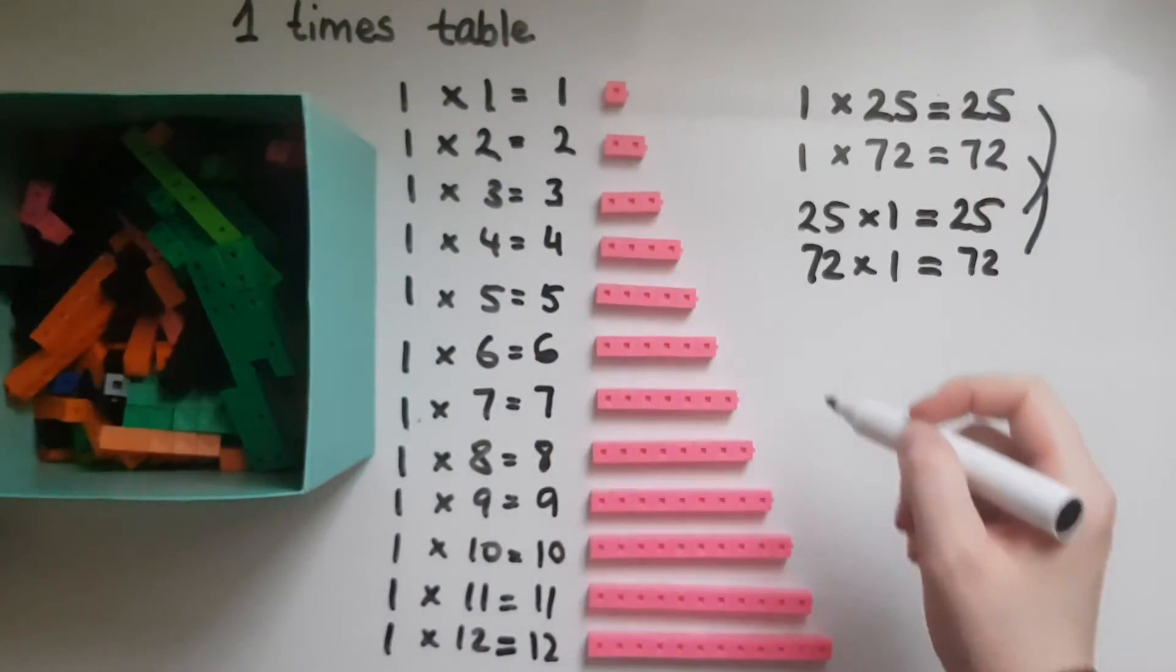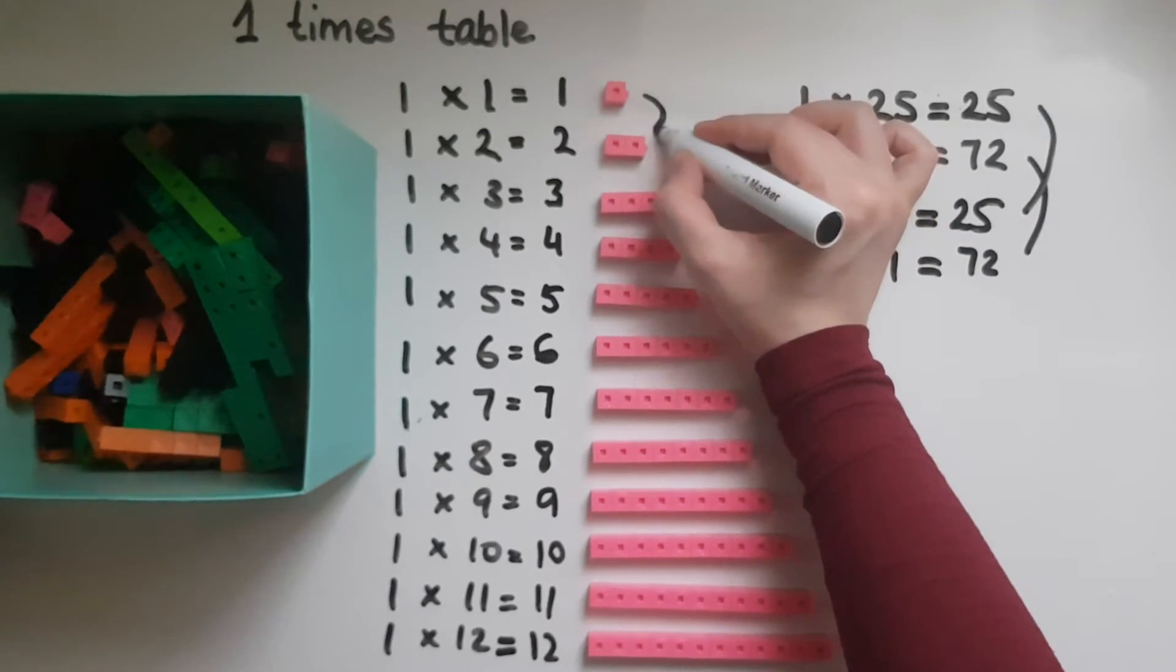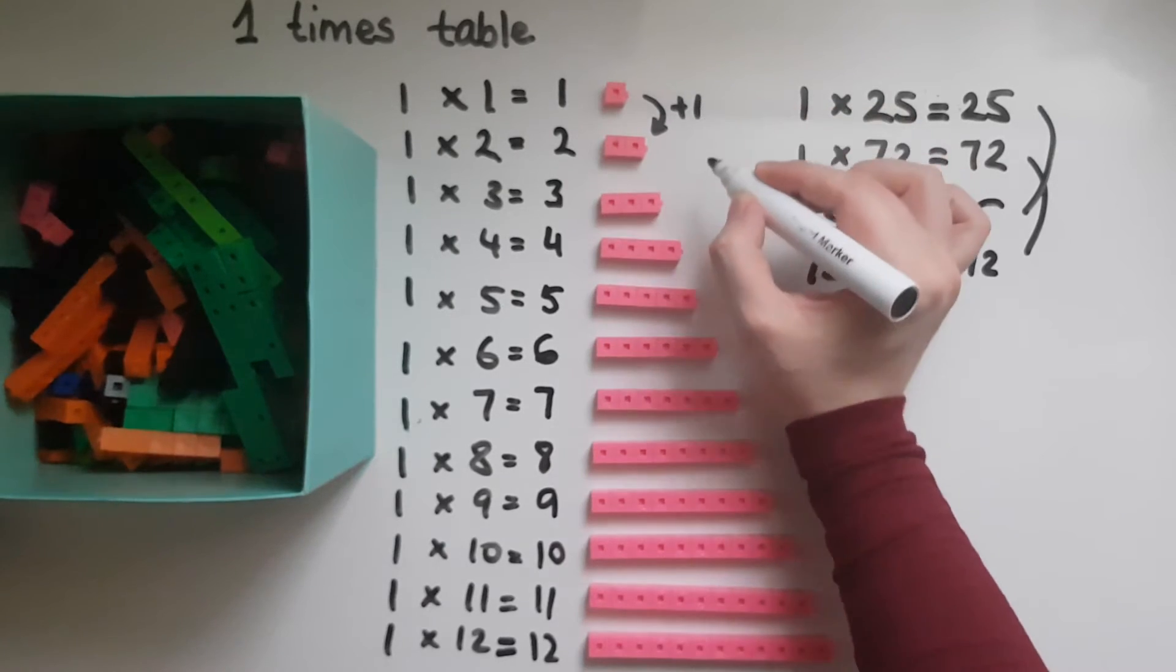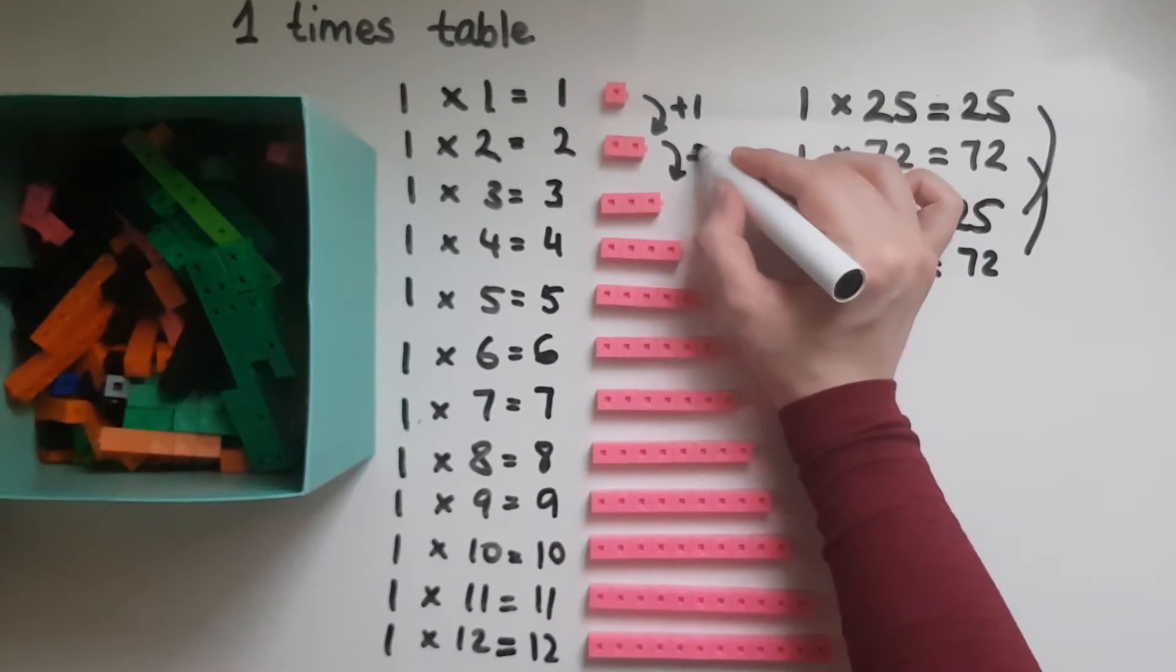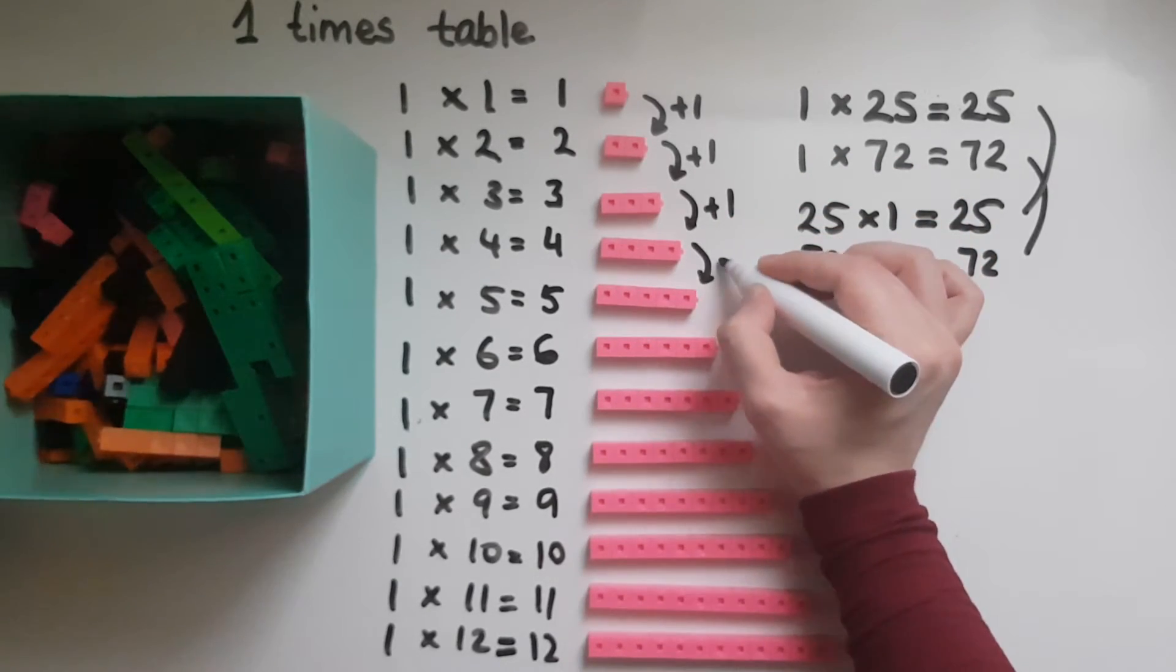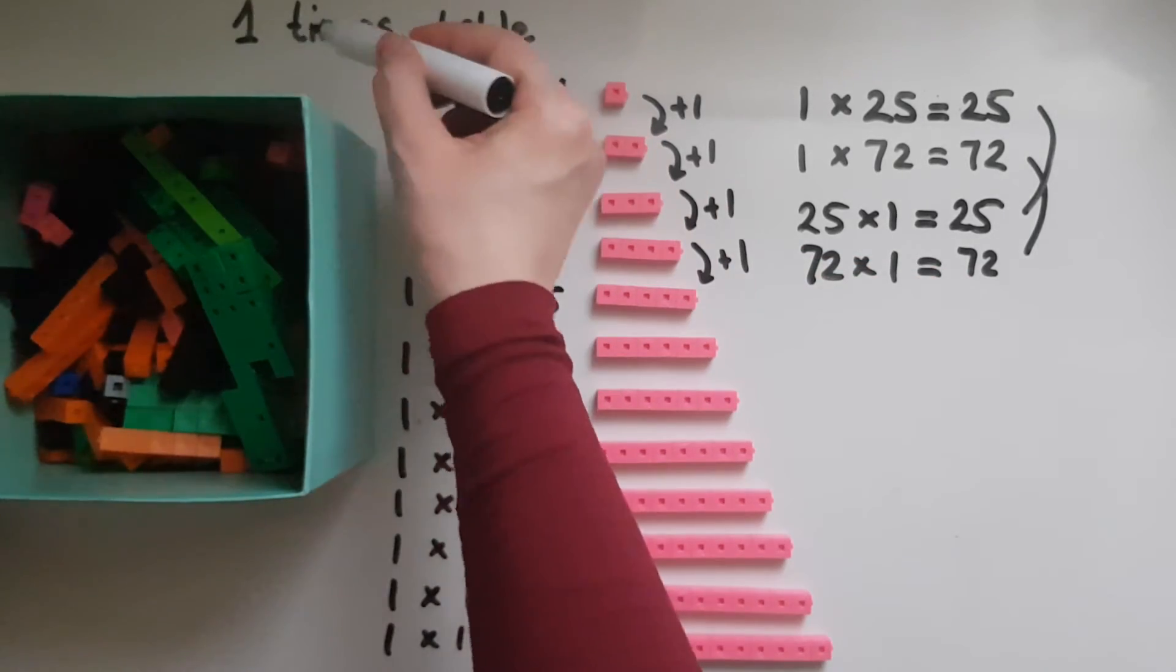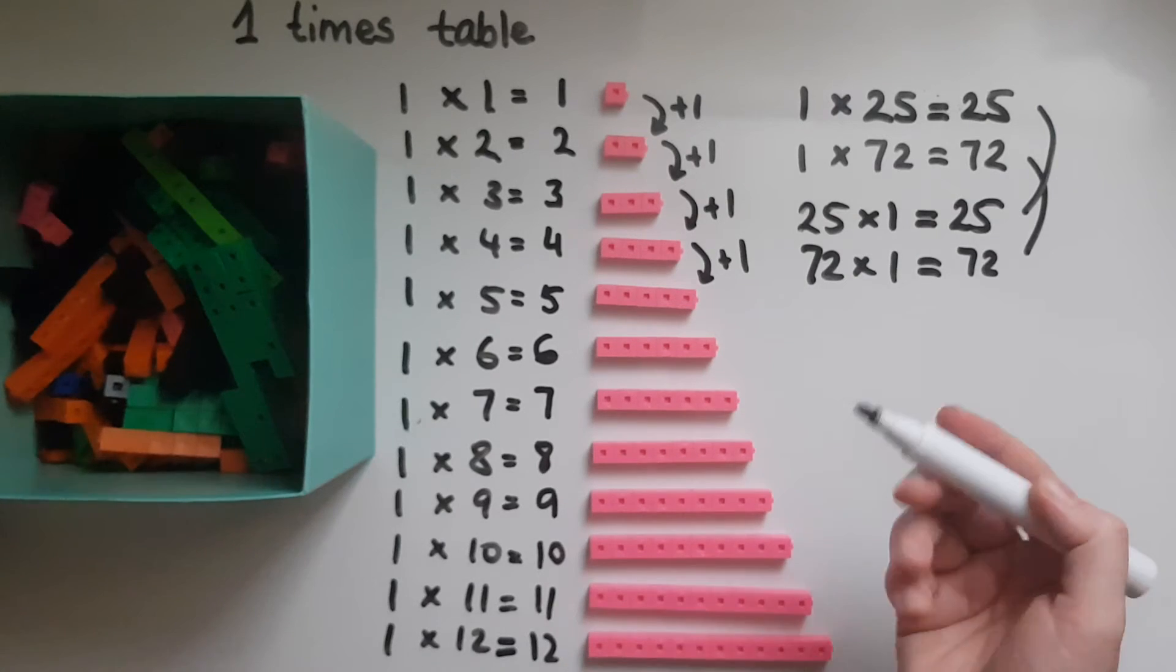So if we look at this visual pattern of the ones timetable, from one we add another one to get to the second one, to two. So we add one again to make it three and another one to make it four. So we add in the one each time. It's the ones timetable, we add in one each time.